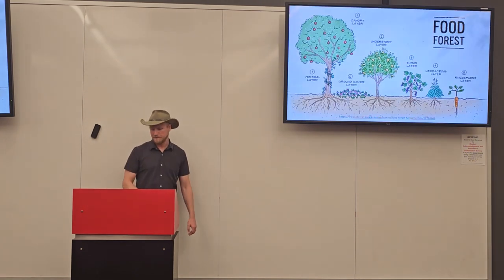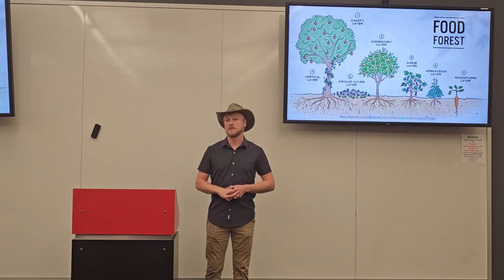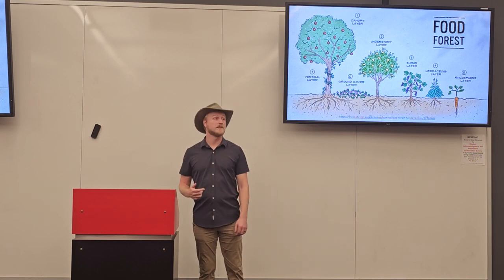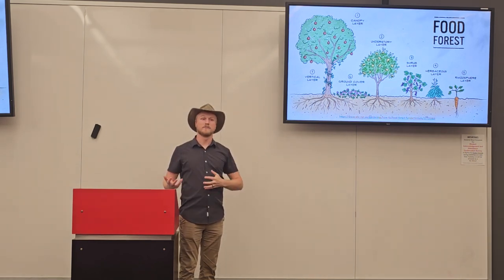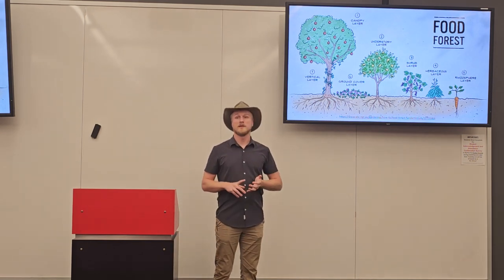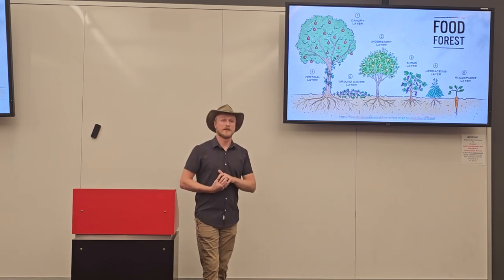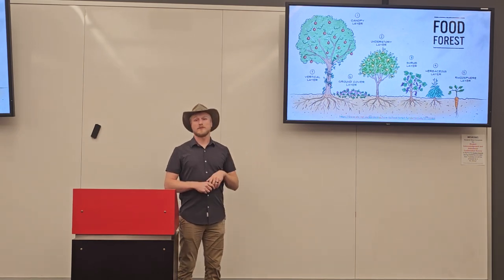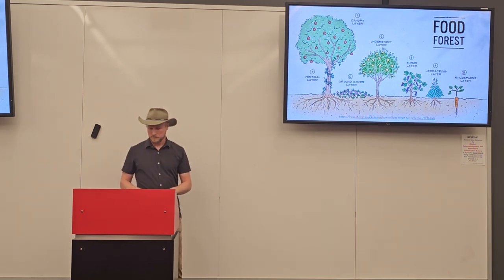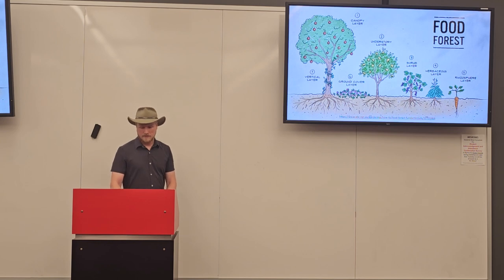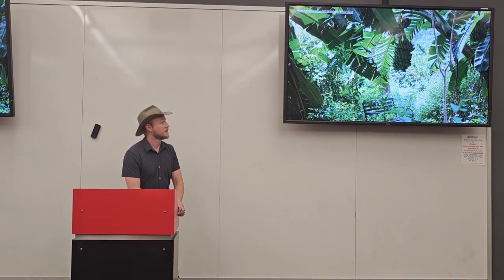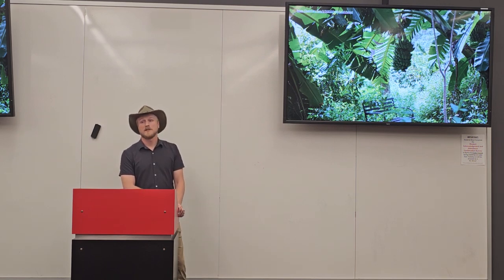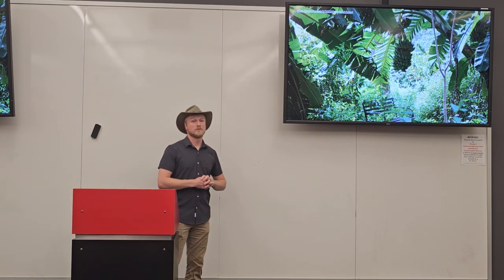A food forest mimics the process of ecological succession. You start with pioneer plants and then develop a forest structure where each layer has a food use — canopy trees could be walnuts, pecans, or avocados, for example. They don't have to be spread out; some are planted very densely. I'll walk through each layer with introductory recommendations specifically for Florida.